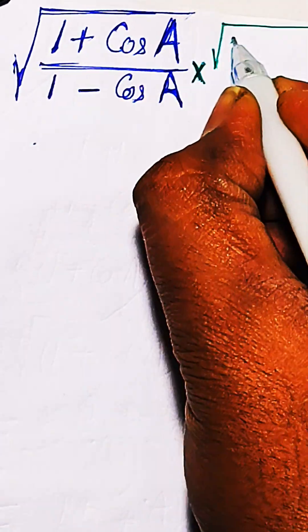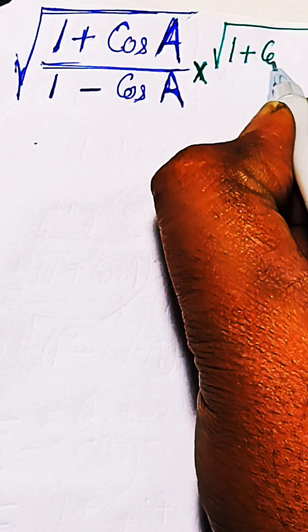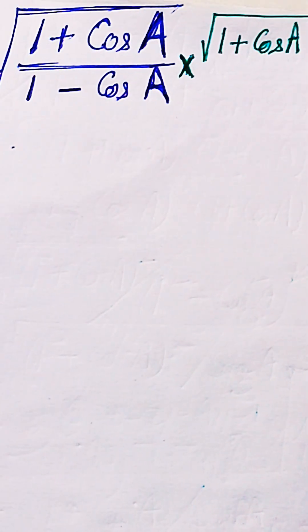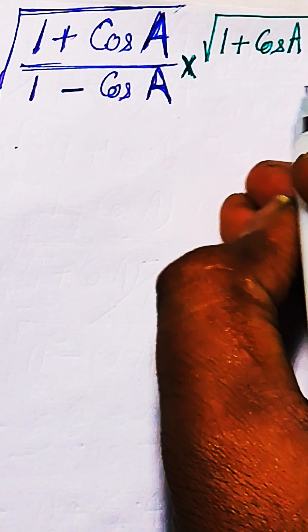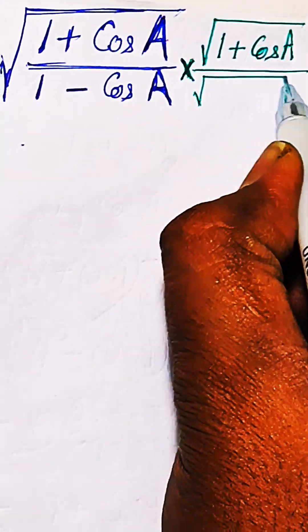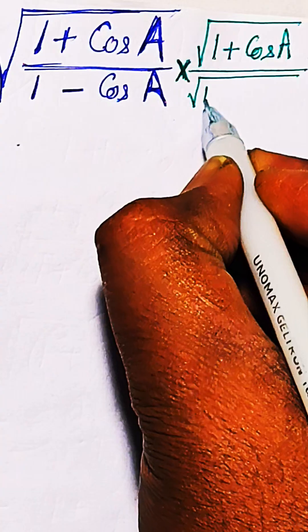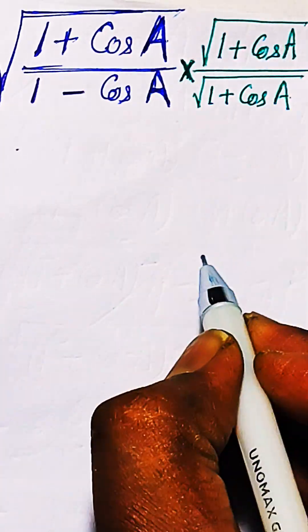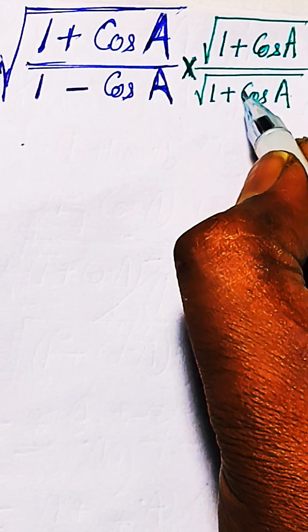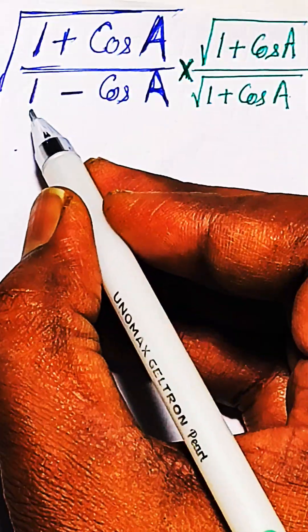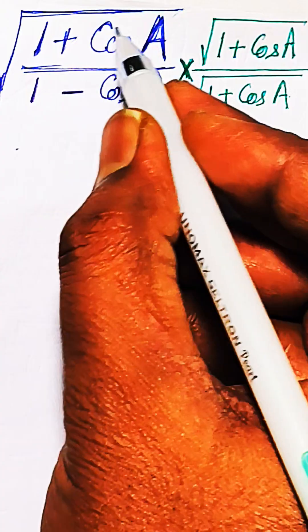√(1 + cos A) in the numerator and simultaneously this will be compensated by √(1 + cos A) in the denominator also, so that both of these will be canceled and we are left with √[(1 + cos A)²/(1 - cos² A)].